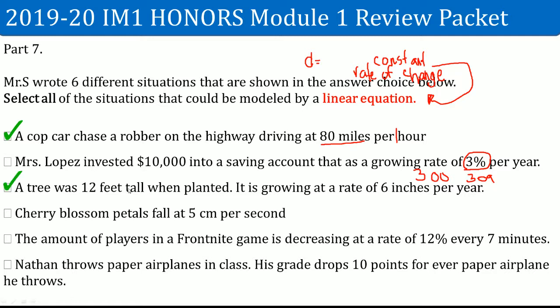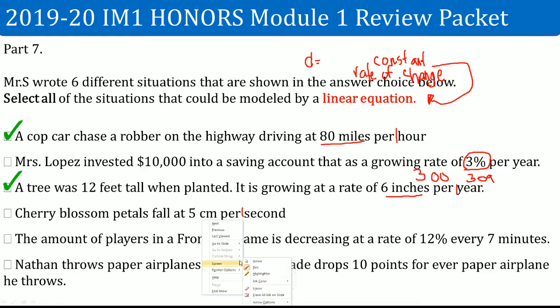A tree that is 12 feet tall grows at 6 inches per year — that is linear because it grows constantly at 6 inches per year. Each year it grows another 6 inches, so it is consistent. A cherry blossom petal falls at 5 centimeters per second — each second it falls another 5 centimeters, so that is also linear.